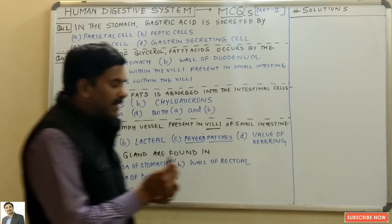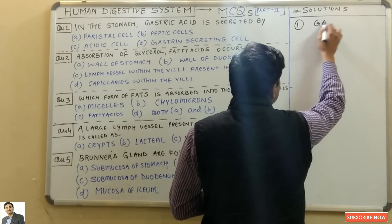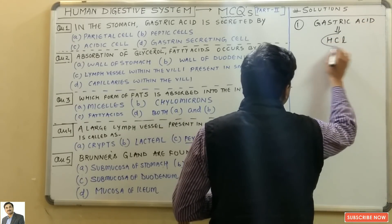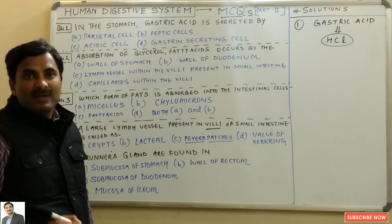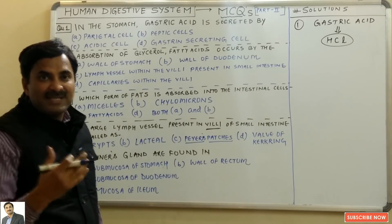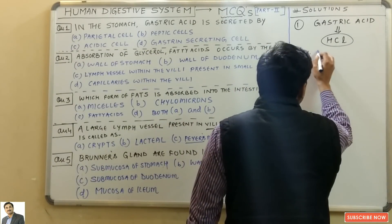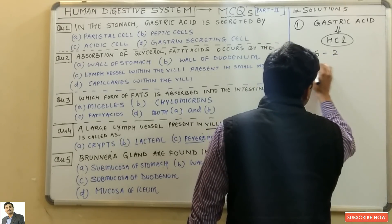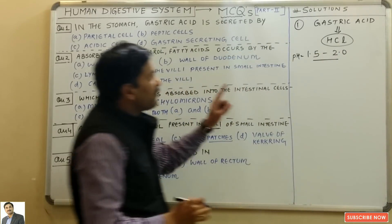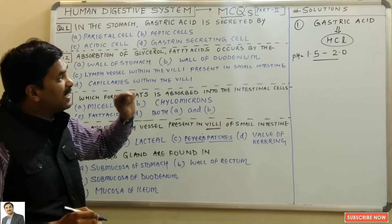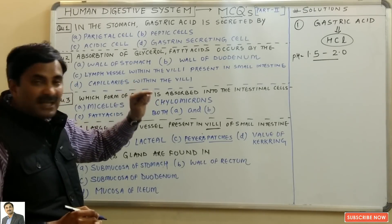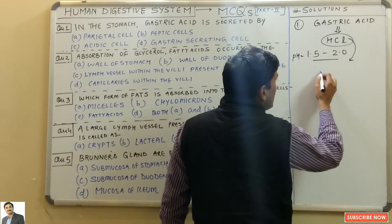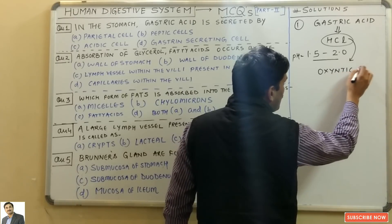In the stomach, the gastric acid is HCl, due to which the pH of the stomach is acidic — specifically 1.5 to 2. The pH of the stomach is highly acidic because of the presence of gastric acid, which is called HCl.